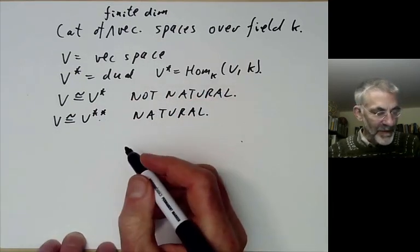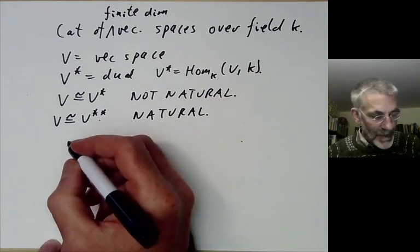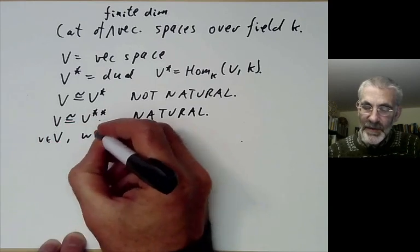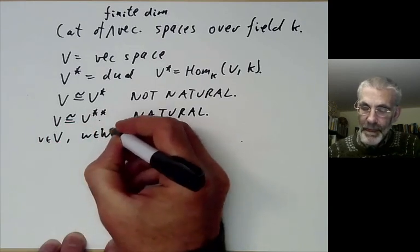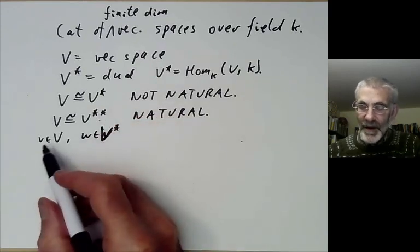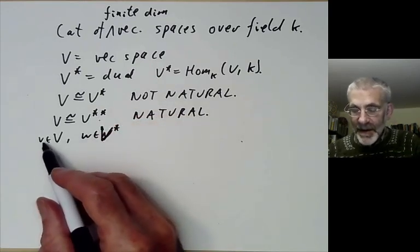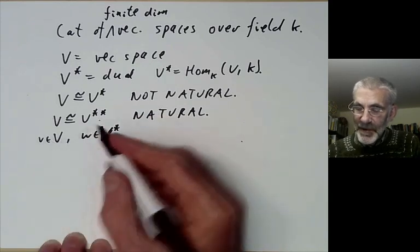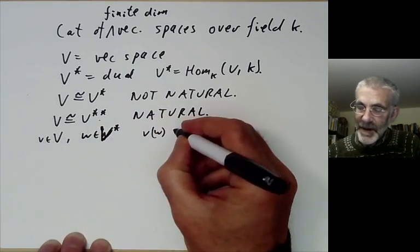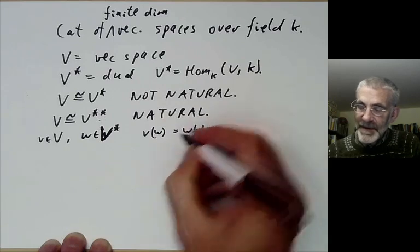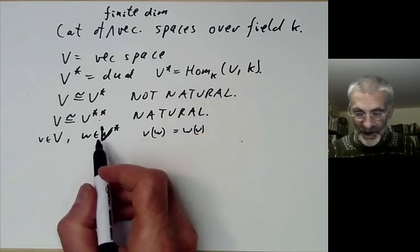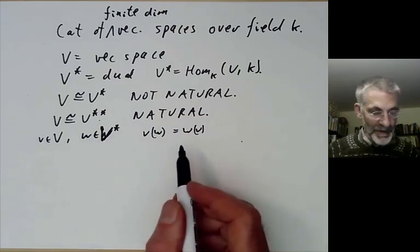For example, if we've got an element v in V and w in the dual of V, then v gives us the following element of the double dual. We just define v(w) to be w(v), and this makes v into a linear transformation on the dual of V. It's a little bit confusing but rather trivial really.